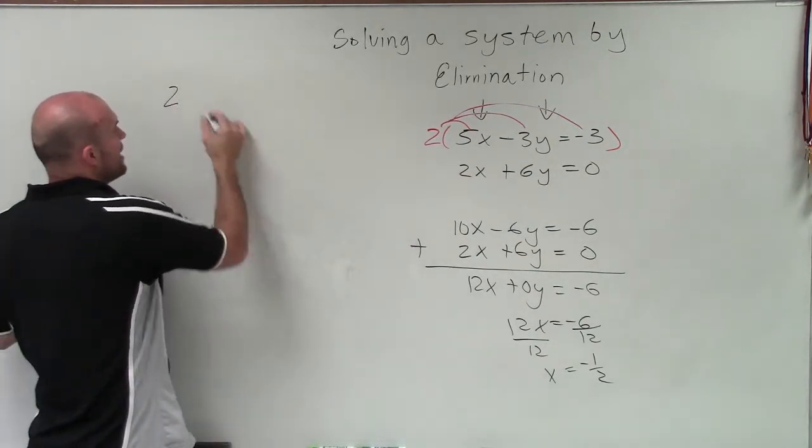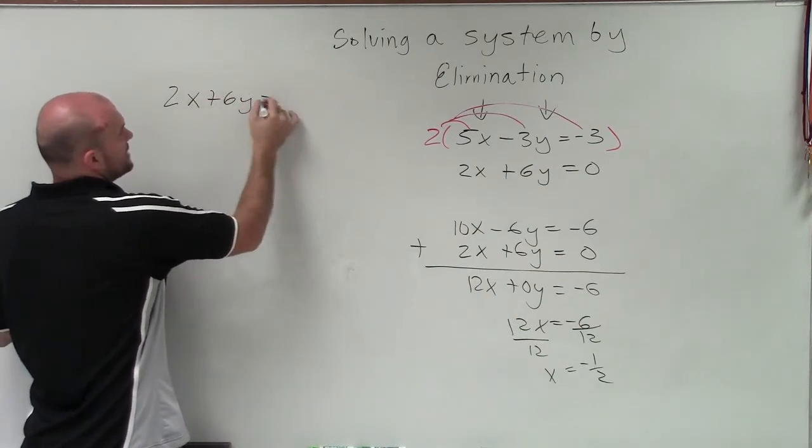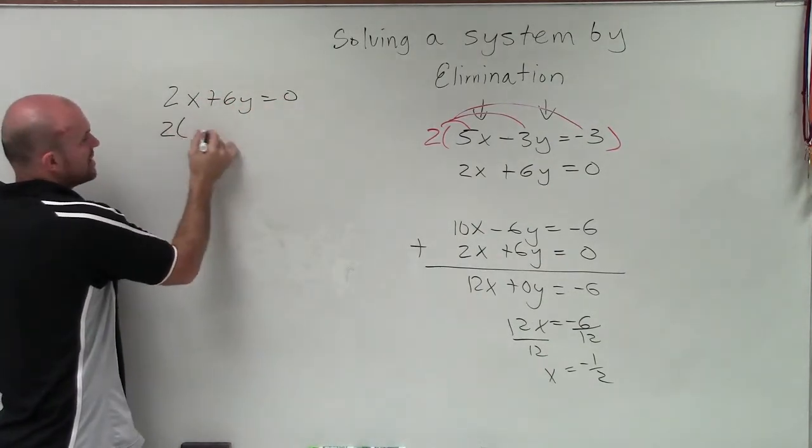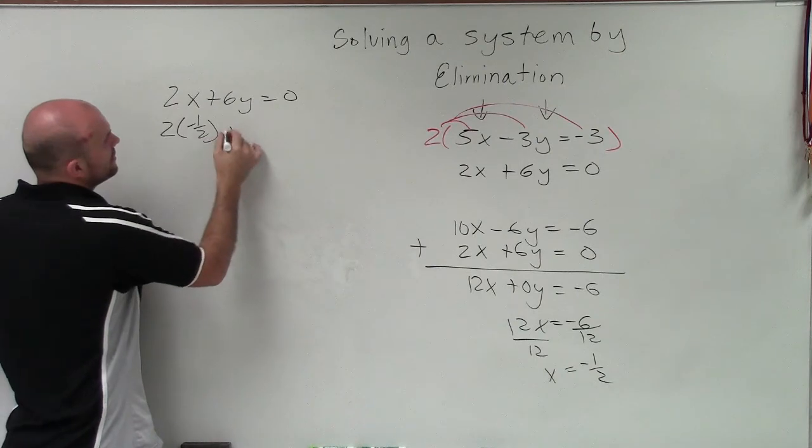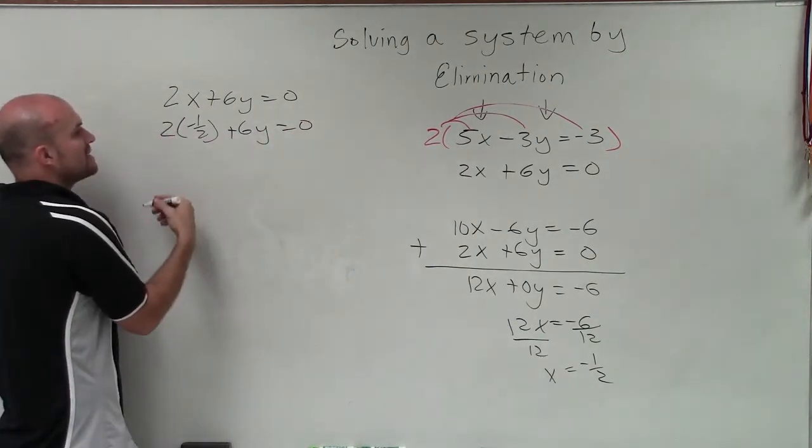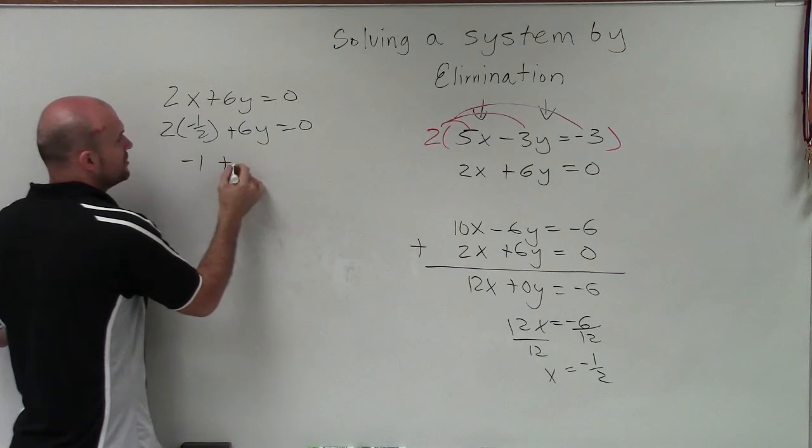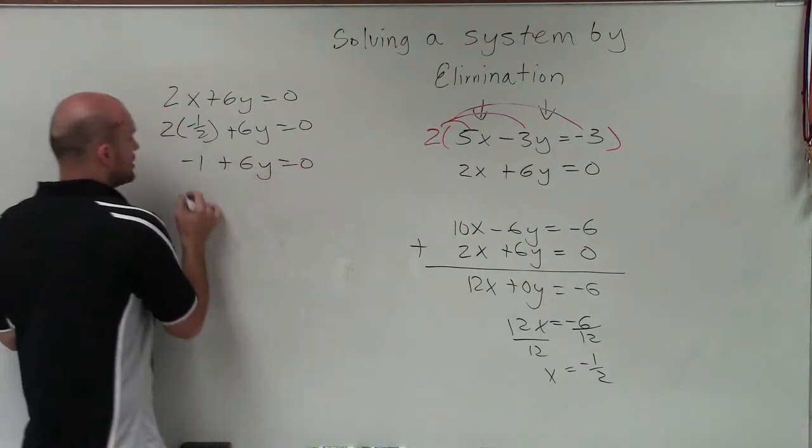So I have, instead of 2x plus 6y equals 0, I'm going to say 2 times negative 1 half plus 6y equals 0. Well, 2 times negative 1 half is going to be a negative 1 plus 6y equals 0.